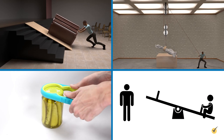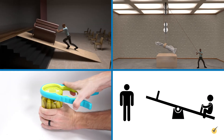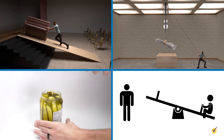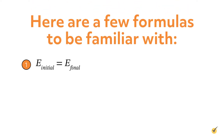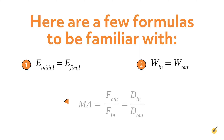Mechanical Advantage comes into play when you use something like a ramp, a pulley, or a lever to make moving things easier. Here are a few formulas to be familiar with. First is the conservation of energy: initial energy equals final energy. Second is a different version of the conservation of energy: work input equals work output. And third is the Mechanical Advantage formula: MA equals the output force over the input force, which equals the input distance over the output distance.